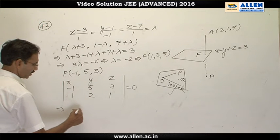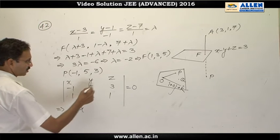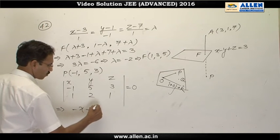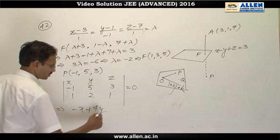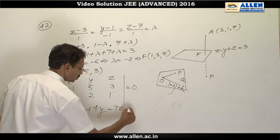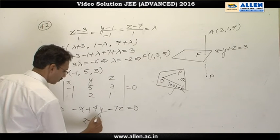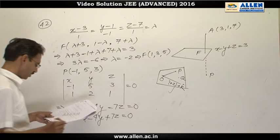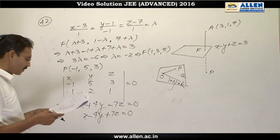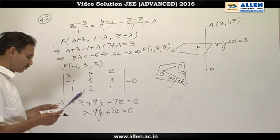This is -x, then +4y, then -7z = 0, or x - 4y + 7z = 0. Therefore, the correct option will be option C.